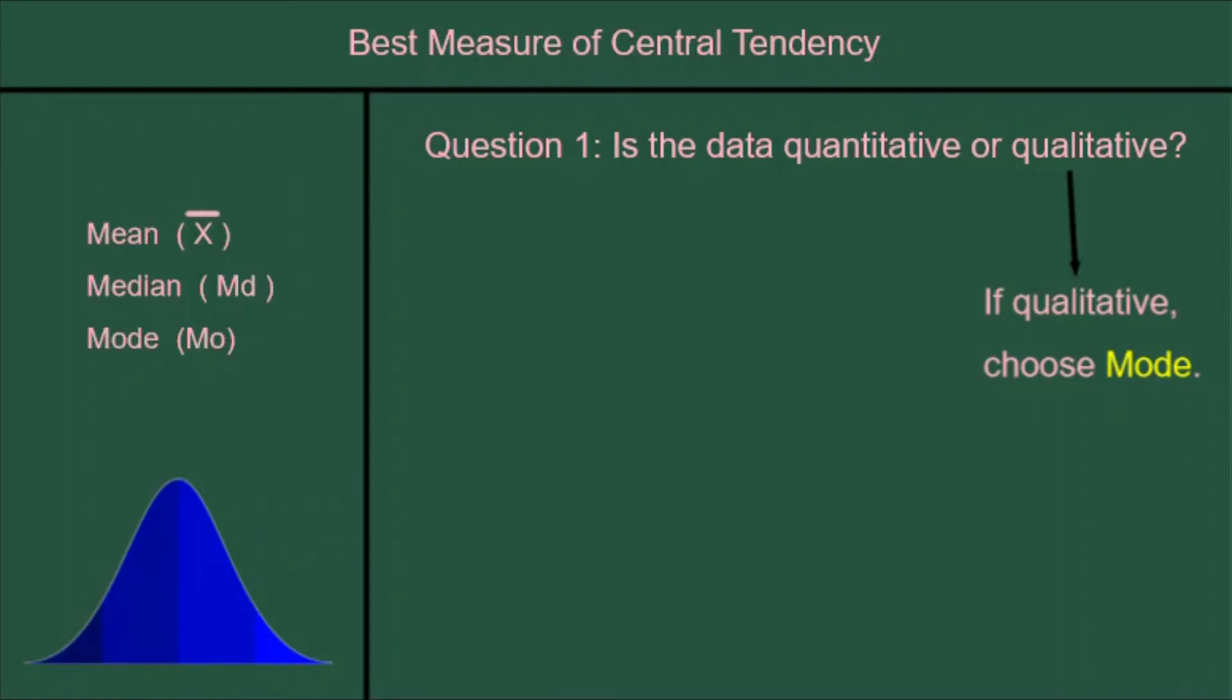And to justify our answer, why did we choose mode? We say because the data is qualitative. So the justification is simply to provide the answer to the question that we used to figure out which one we want.